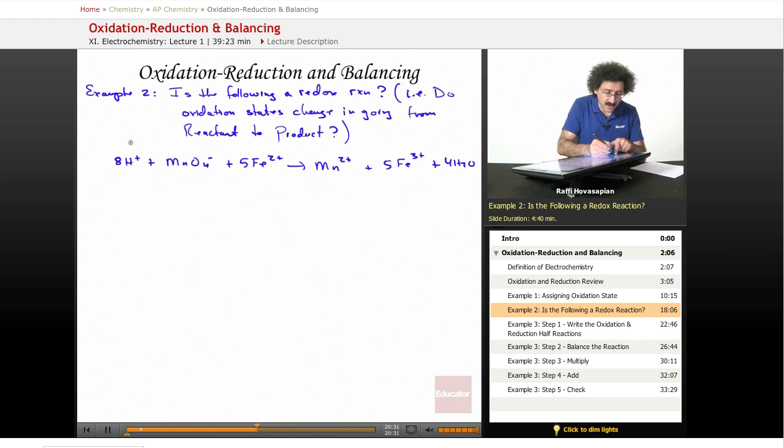H+, the oxidation state is +1. Permanganate, we said that the oxidation state was +7, and for oxygen is -2. Remember, -2 is always the same for oxygen. There's 4 of them for a total of -8. -8 plus 7 gives me -1, so the manganese has an oxidation state of +7. Iron, the oxidation state is +2. Here, manganese, the oxidation state is +2.